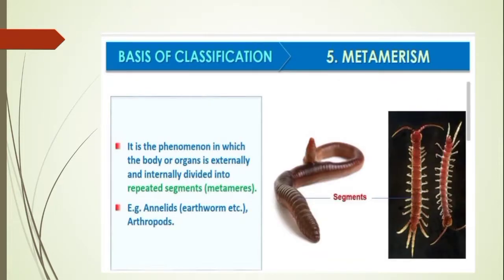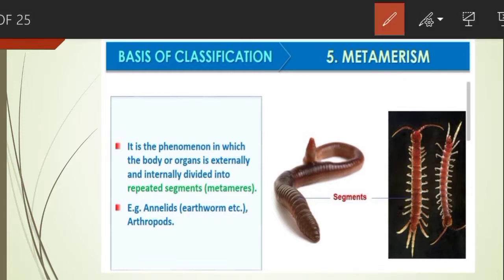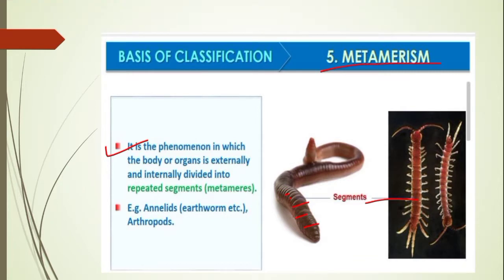Moving to the next feature: metamerism. In some animals, the body is externally and internally divided into segments. A segmentation that simultaneously divides the body both externally and internally is called metamerism or metameric segmentation. This is found in Annelids, Arthropods, and Chordates. As seen in the figures, the body is divided into small segments.